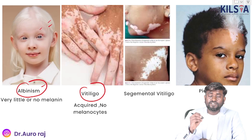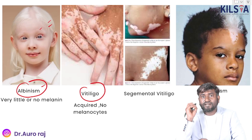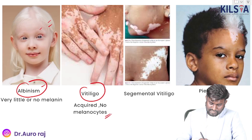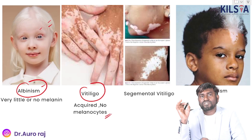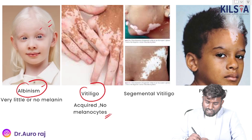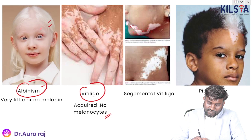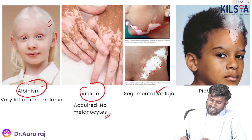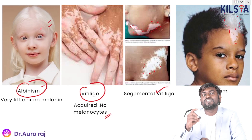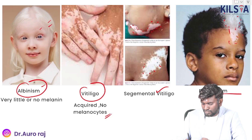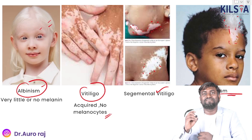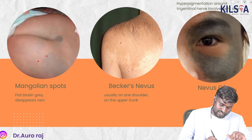In vitiligo, remember it is an acquired condition caused by the absence of melanocytes — no melanocytes. Vitiligo is further classified into segmental vitiligo. The condition where there are whitish patches with lots of white hairs is called piebaldism.